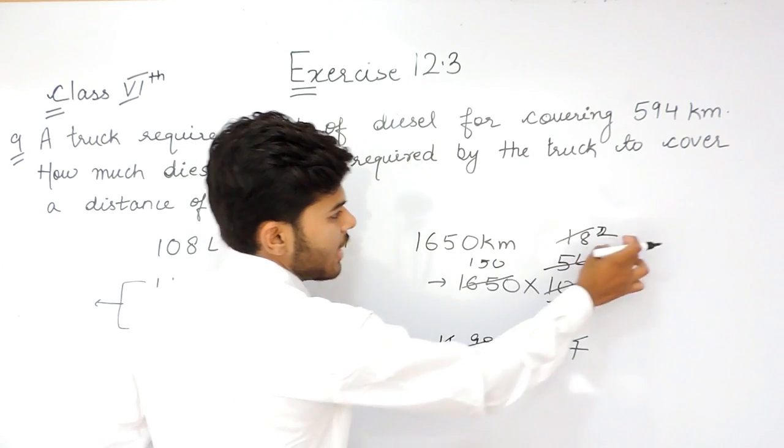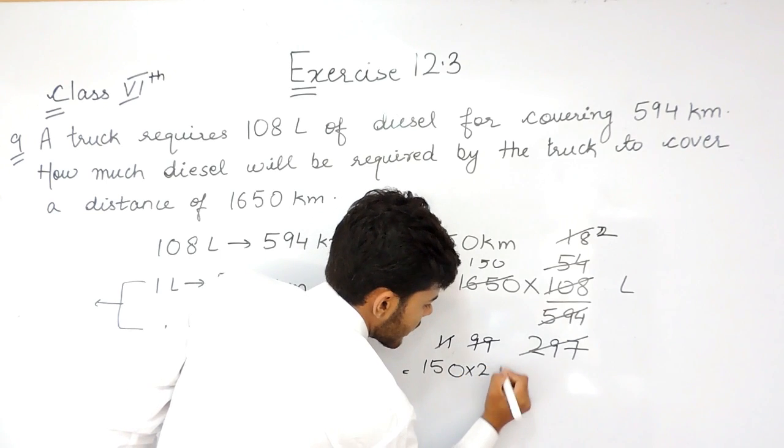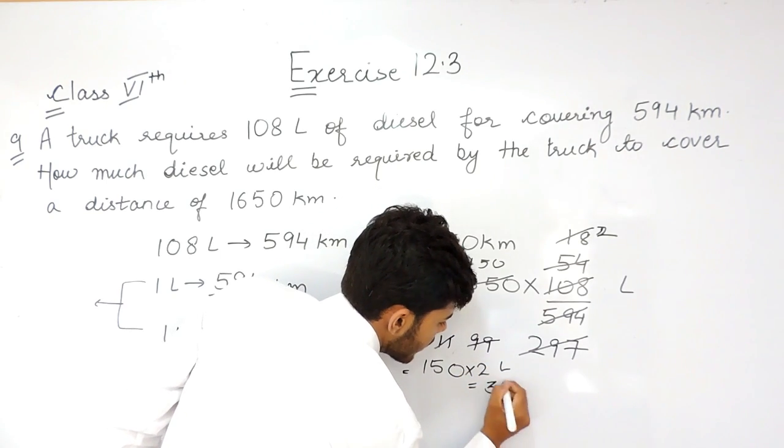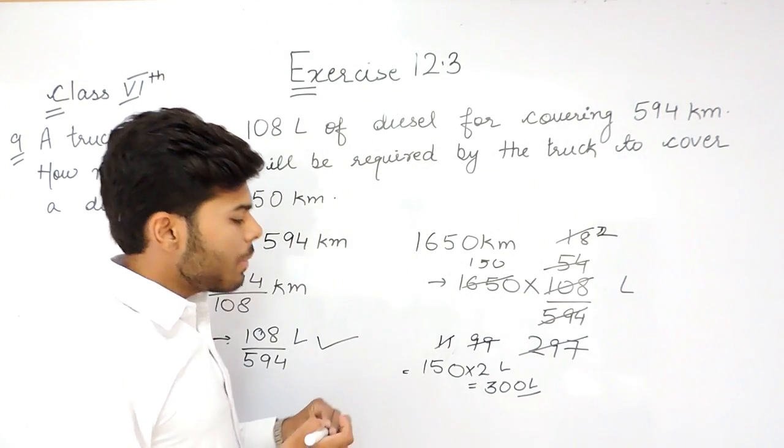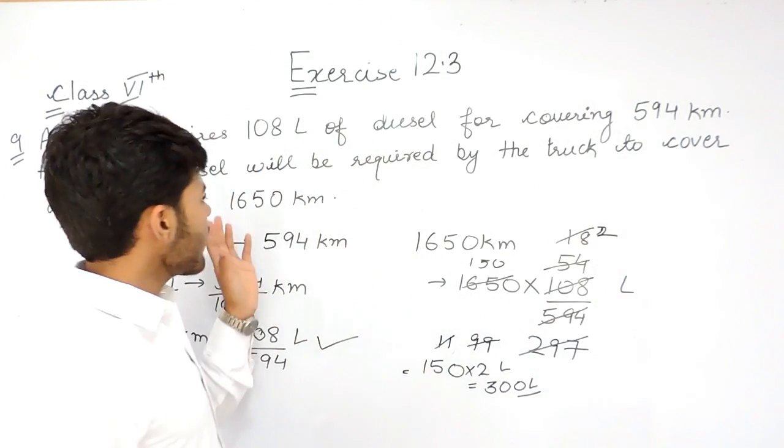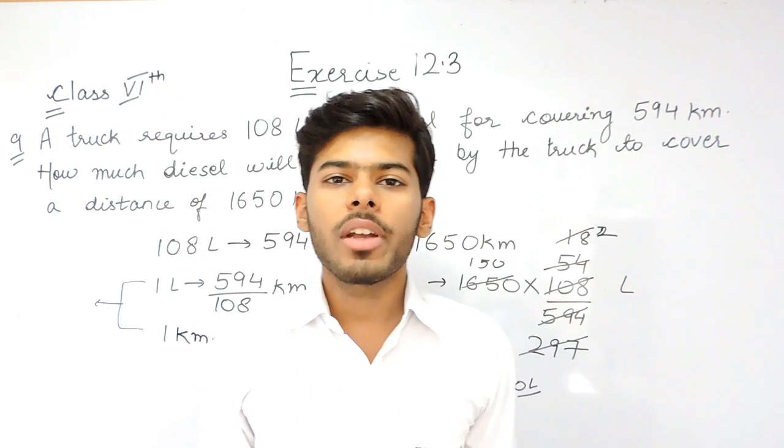That will be equal to 300 litres. So 300 litres of fuel will be required by the truck to cover a distance of 1650 km. This is how you can solve this question.